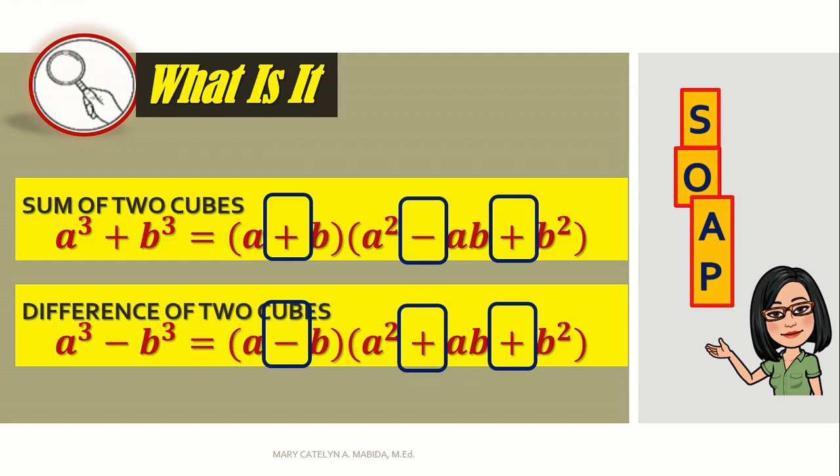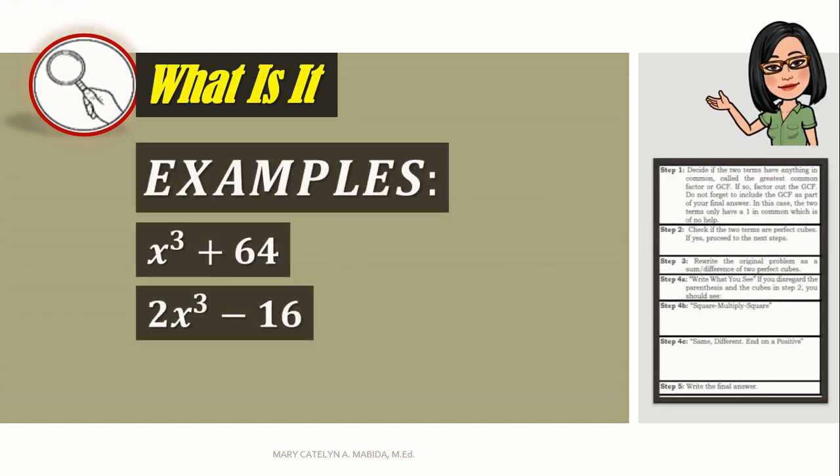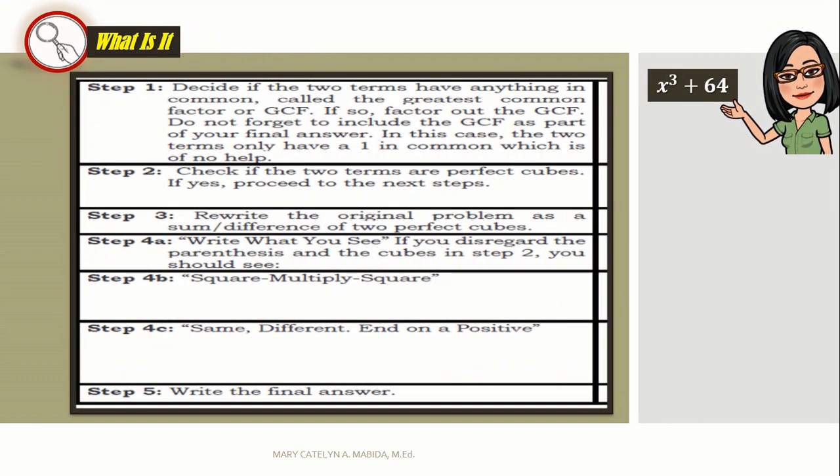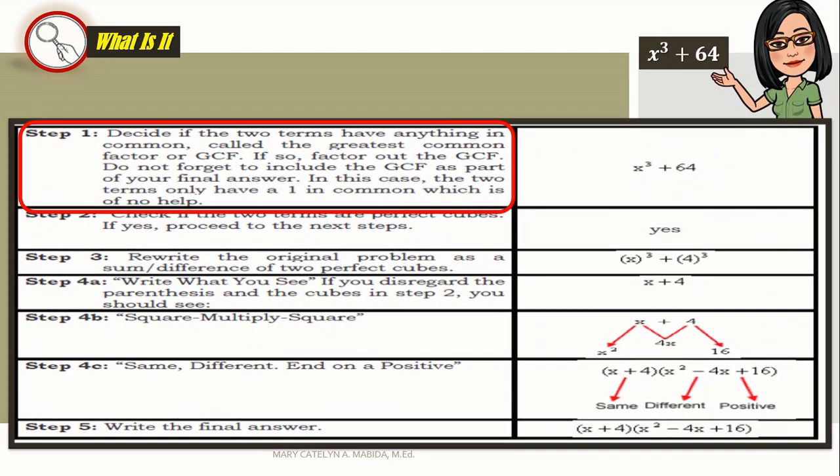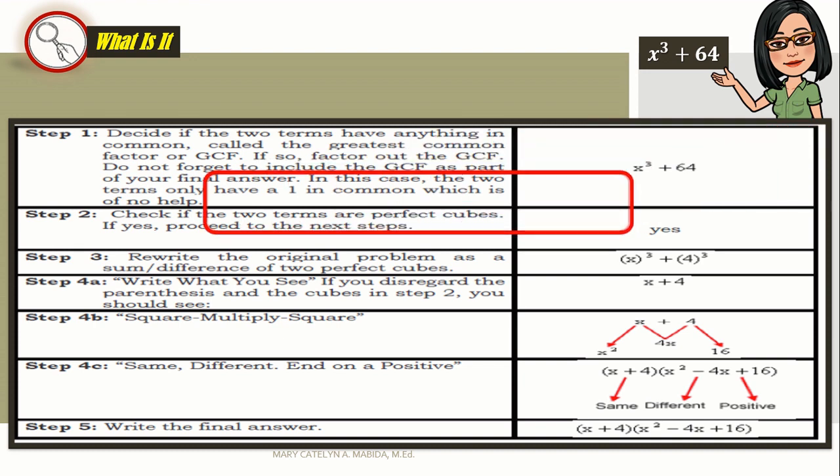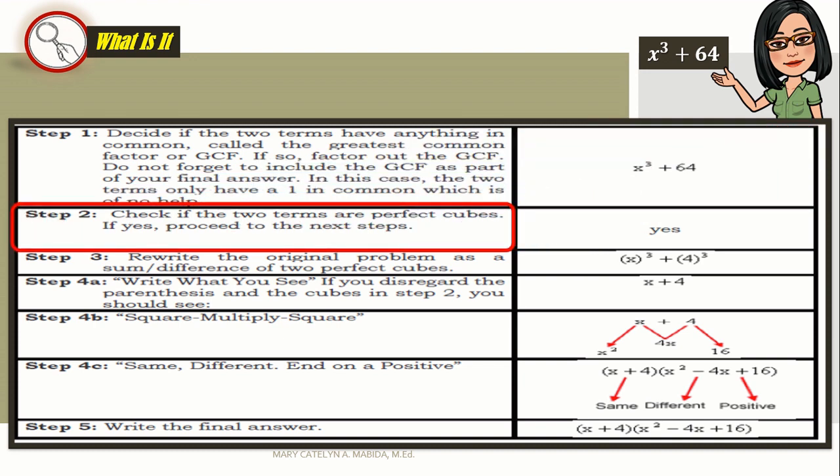Good job! Let's go to example number one. Step one: decide if the two terms have anything in common called the greatest common factor. If so, factor out the GCF, and do not forget the GCF as part of your final answer. In this case, they don't have a common factor. Let's move on to step number two. Check if the two terms are perfect cubes. Is x cube a perfect cube? Yep. Is 64 a perfect cube? Yes, yes, yes!